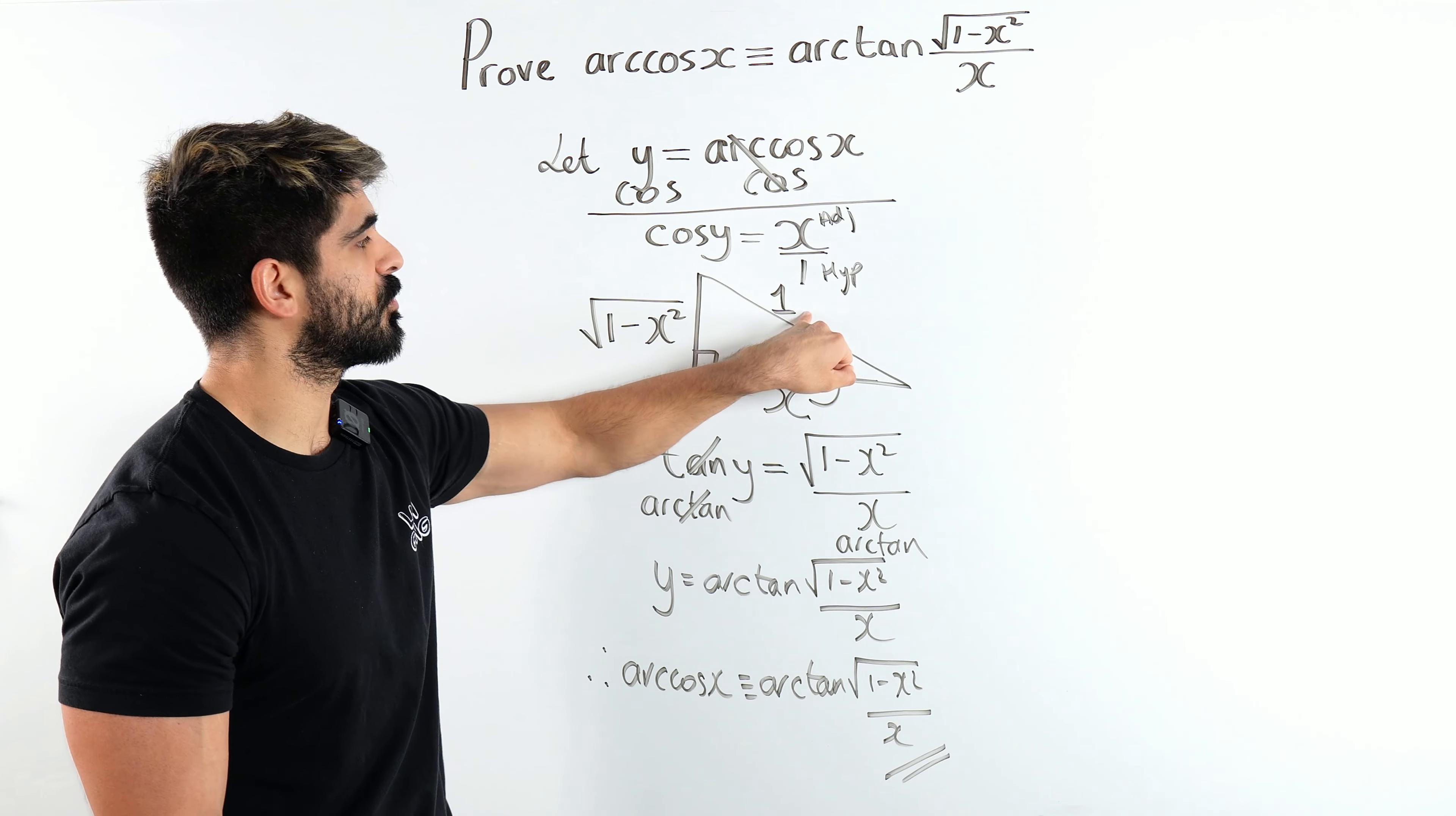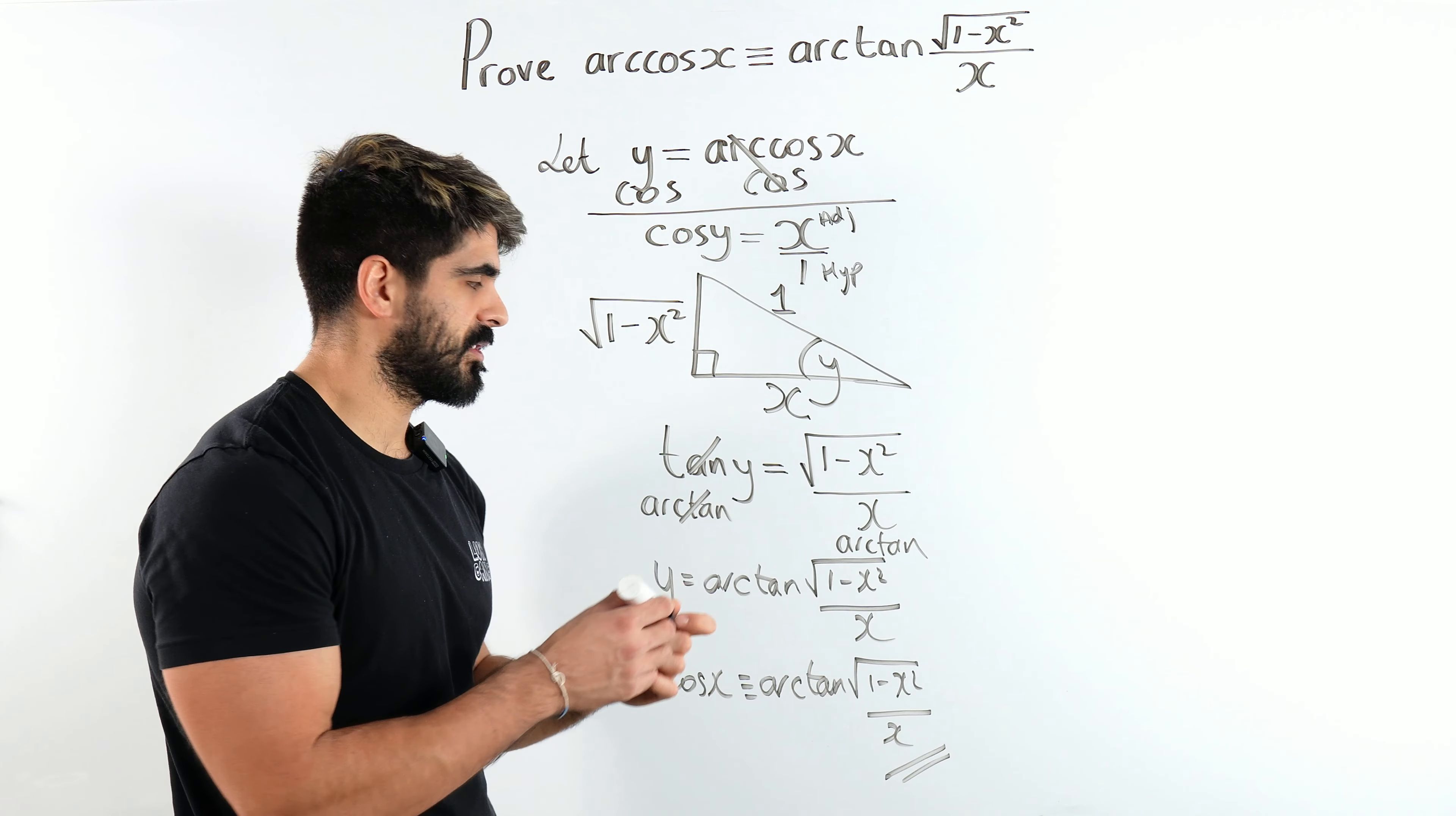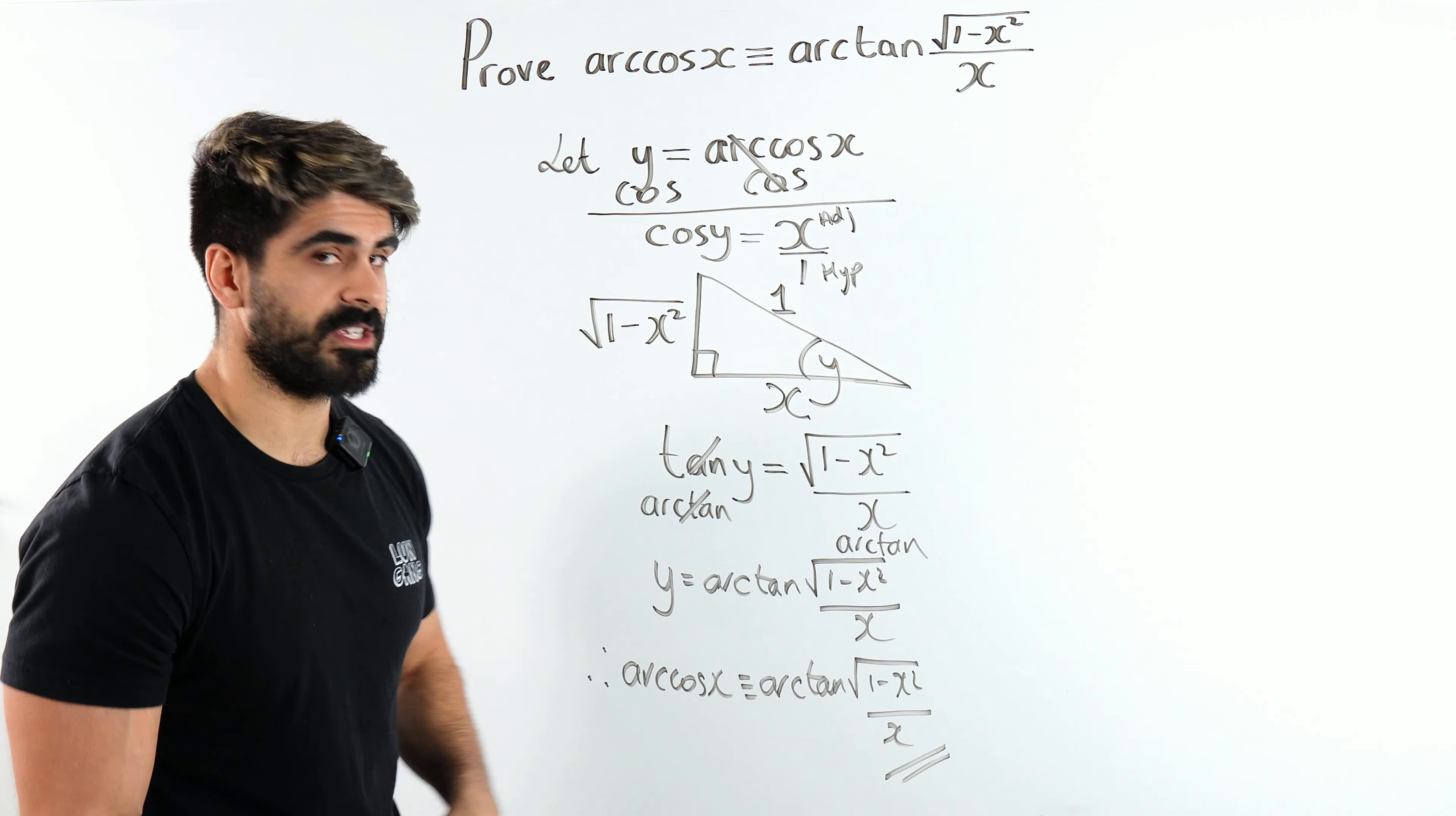Now, you could have done it the other way around. You could have let y equal this. You would have got tan is this. You then would have got this same triangle. You would have just had to work out the hypotenuse is 1. Then do cos x over 1. You would have got y is arccos x. So you could have done it that way as well. It's up to you how posh you're feeling.